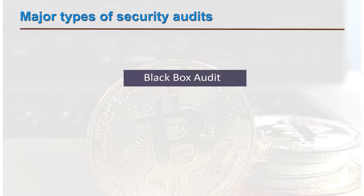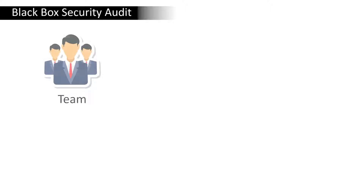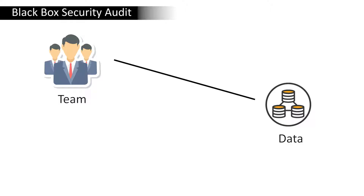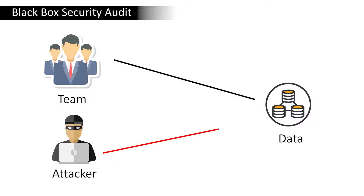In a black box security audit, the team will only have access to publicly accessible information about the target environment. This type of test aims to simulate the real-world scenario of external attackers targeting and attempting to compromise the systems. It gives insight into the robustness of information security controls when under targeted attack by malicious intruders.